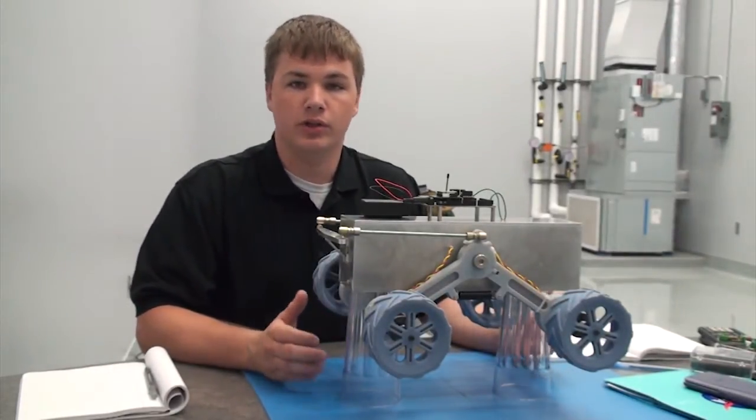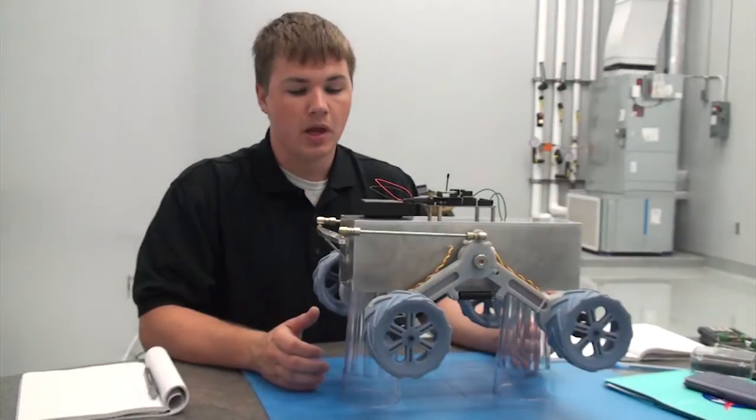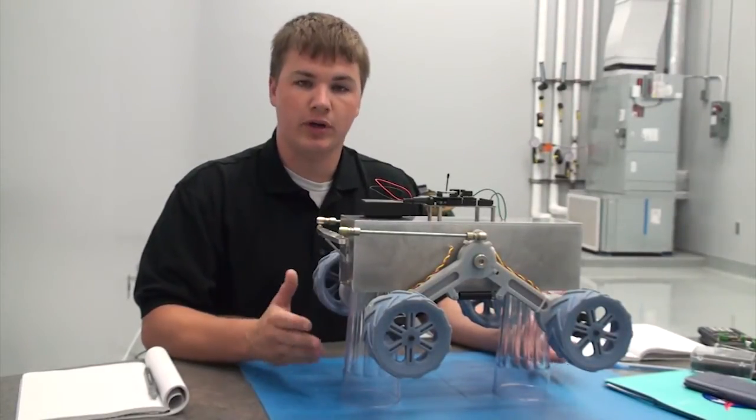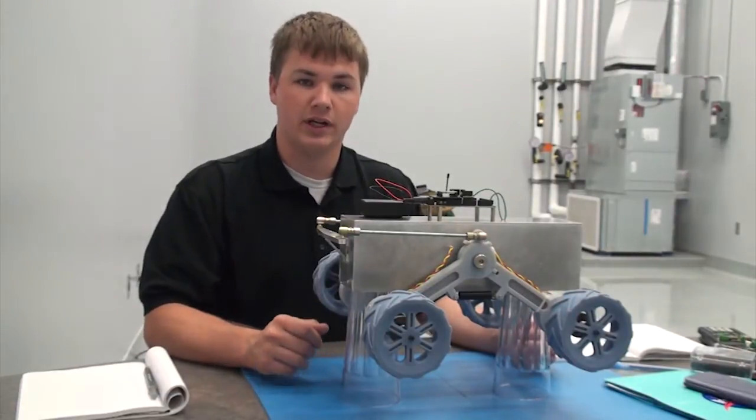So the first thing that's unique about this is we use a four-wheel rocker system. And it's modeled after the Mars rovers, Spirit, Opportunity, and Curiosity. We only use four wheels instead of six.